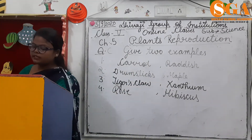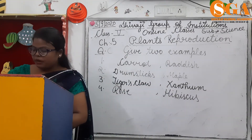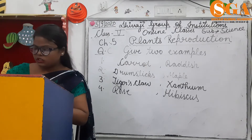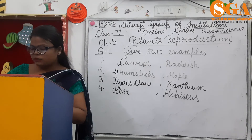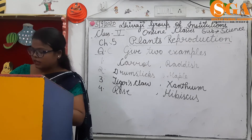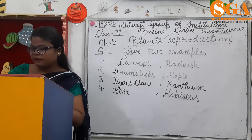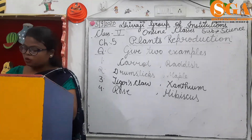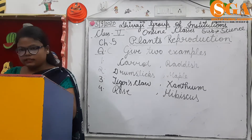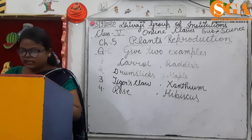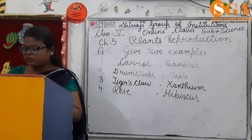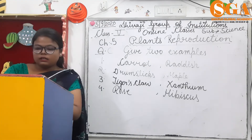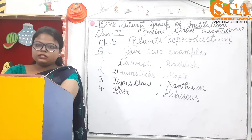I will repeat this exercise. Give two examples. Plants can be grown from roots: carrot and radish. Seeds dispersed by air: drumstick and maple. Seeds dispersed by animal: tiger's claw and xanthium. Fourth, plants can be grown from stem cutting: rose and hibiscus.